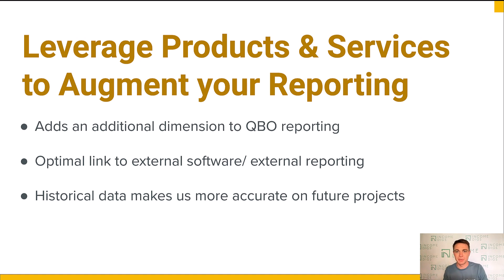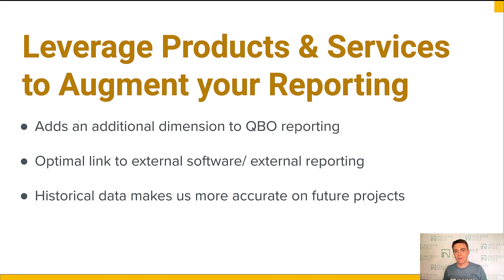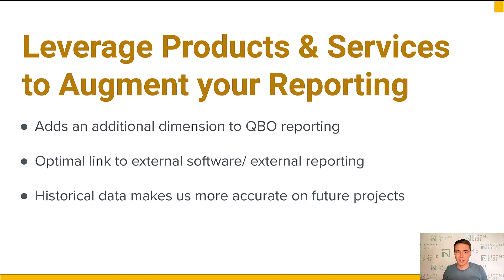Using products and services — it used to be called items; another term would be cost codes — it adds an additional dimension to your QuickBooks Online reporting. It's also the optimal link between external software and QuickBooks Online. For those of you considering BuilderTrend or Co-Construct, or really any of those outside platforms, they're going to ask you for cost codes, and cost codes link directly to products and services. So we need to be using them in QuickBooks first so we can link to that external software.